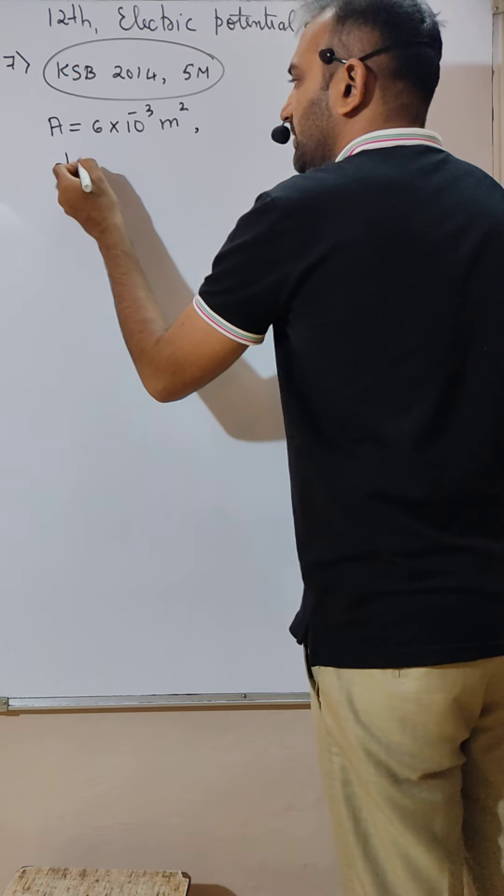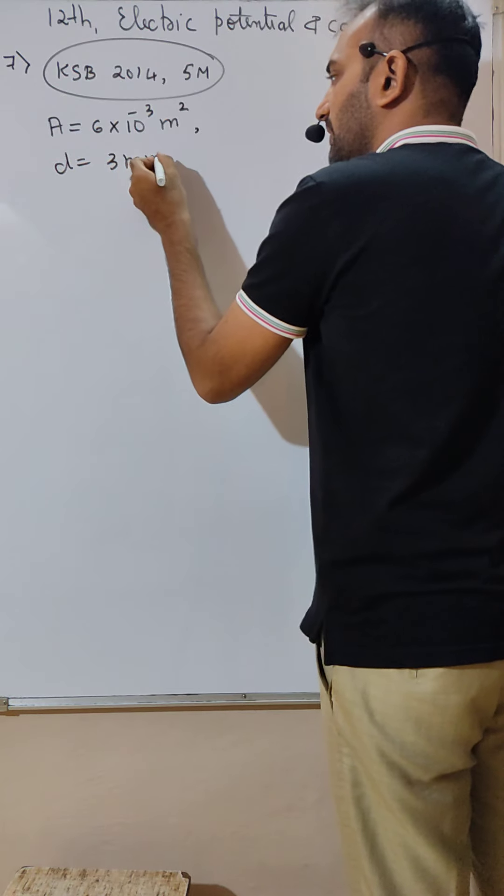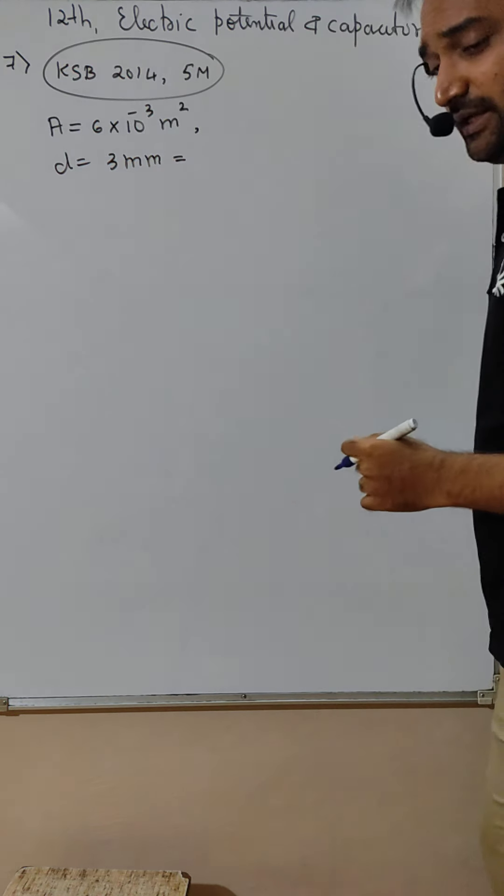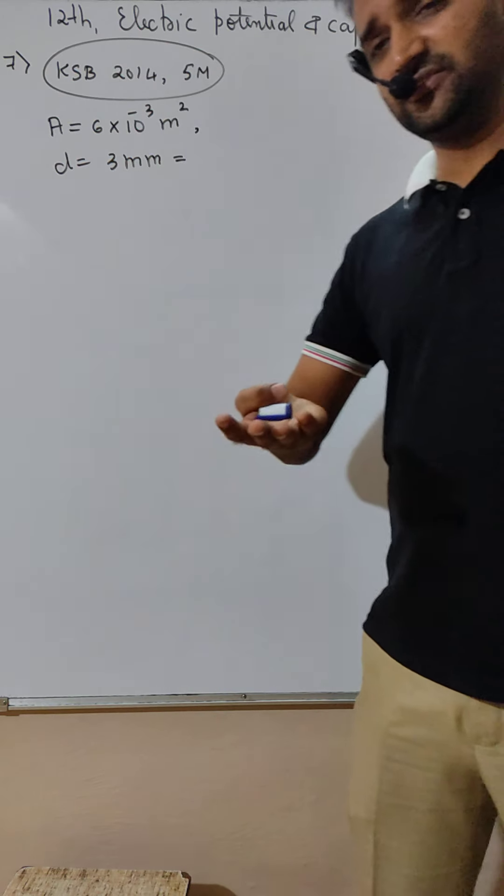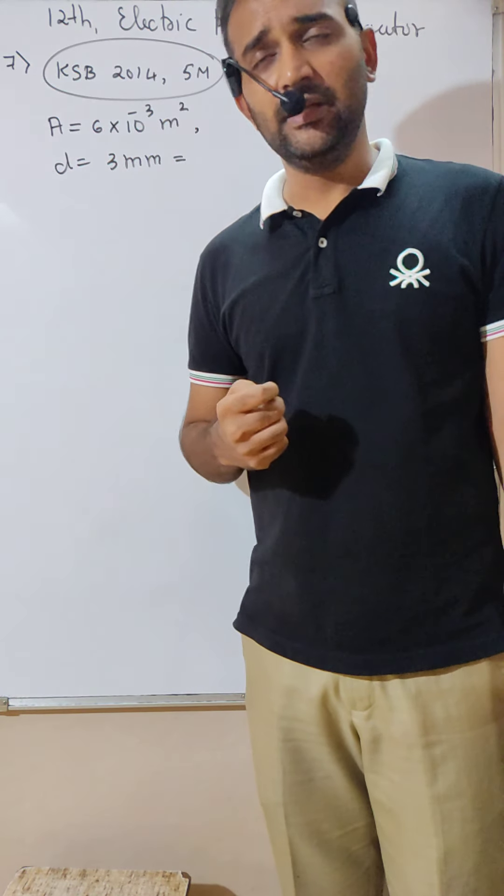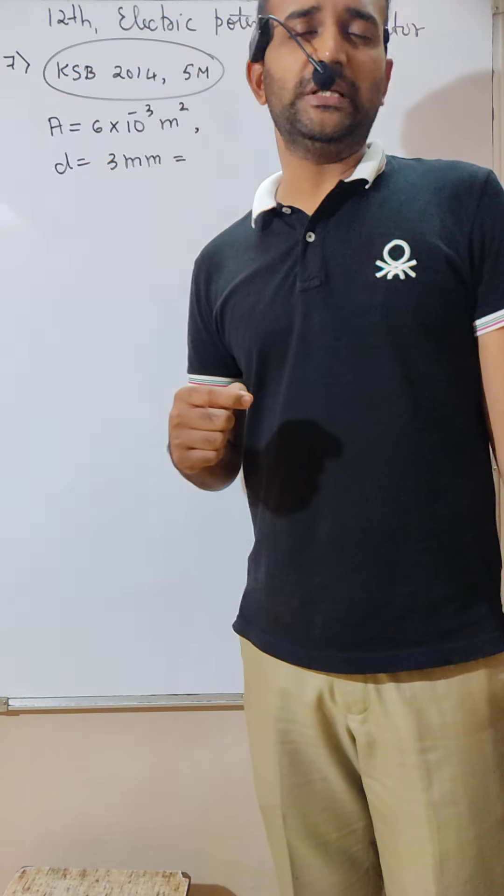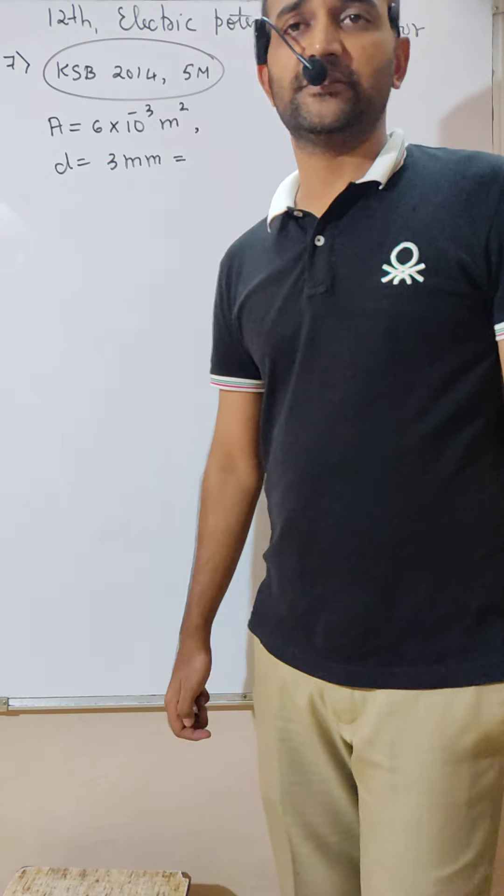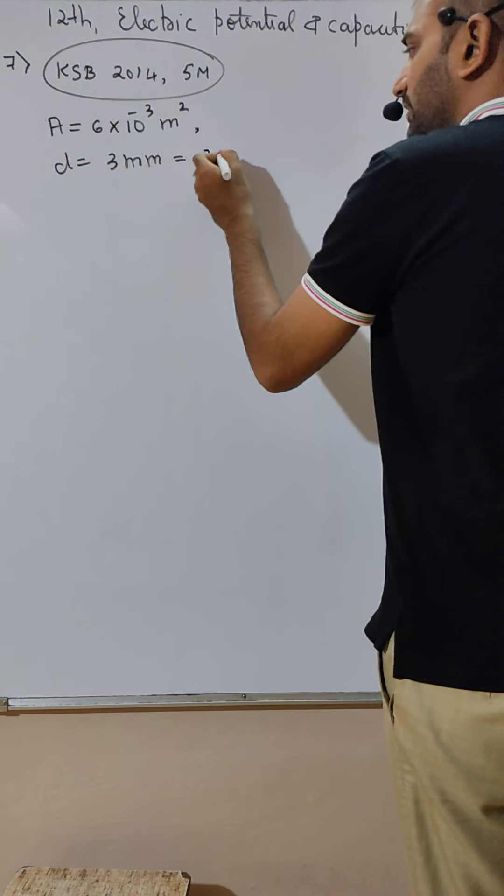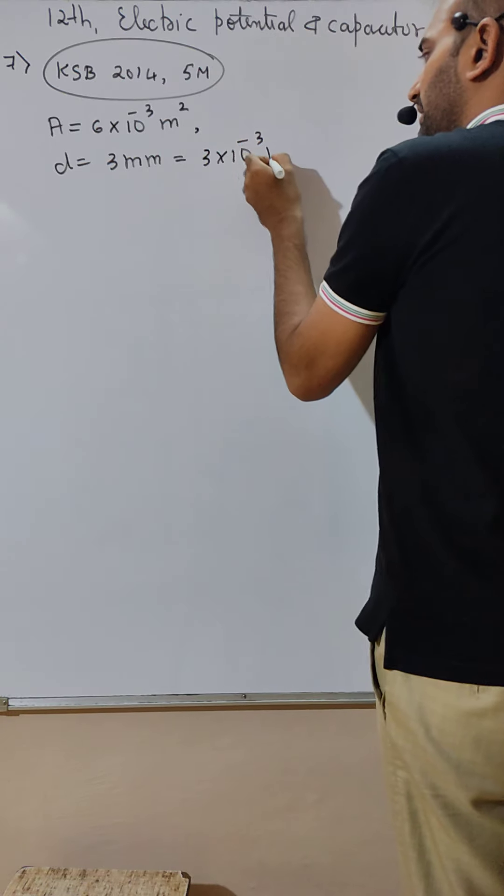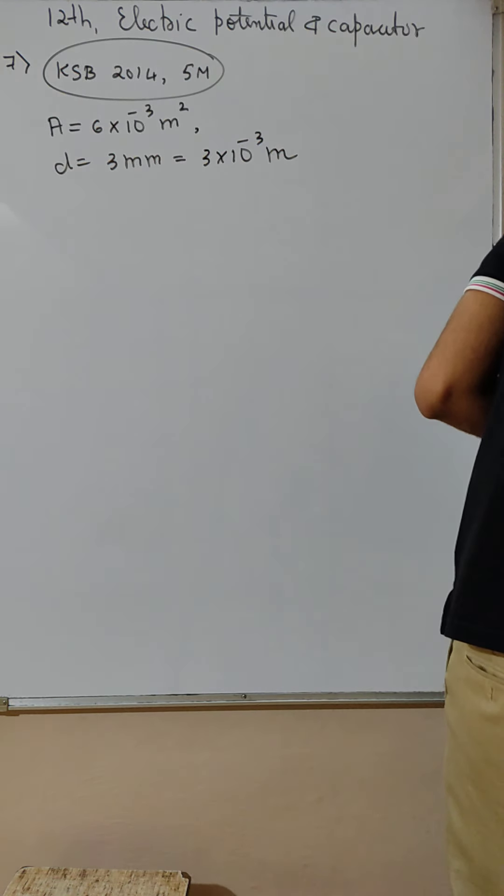The distance between them is 3 mm. Please remember, all the calculations have to be done in SI units, so 3 into 10 raised to minus 3 meter. Calculate the capacitance of the capacitor.